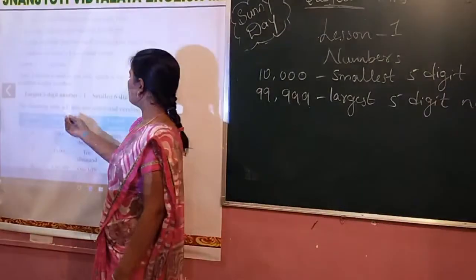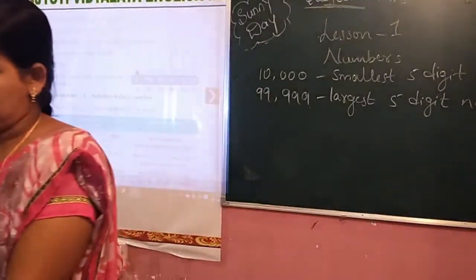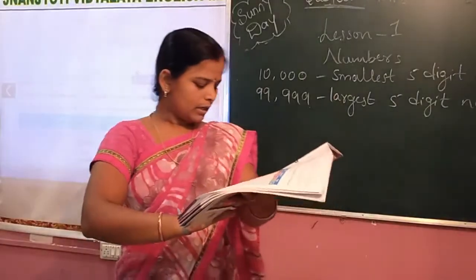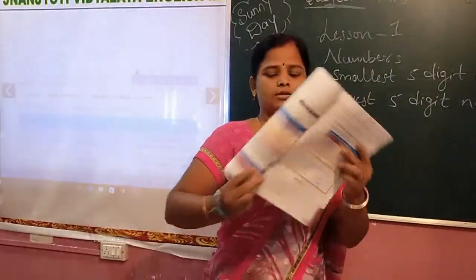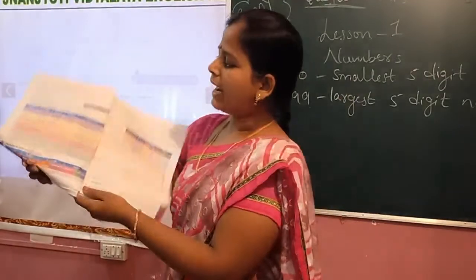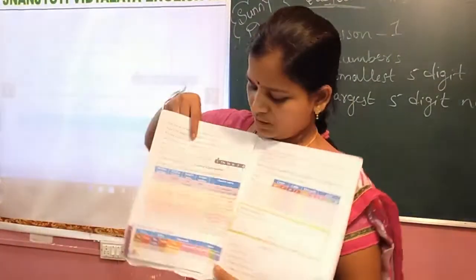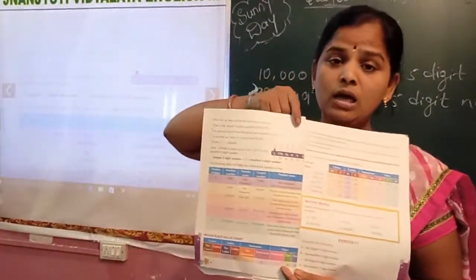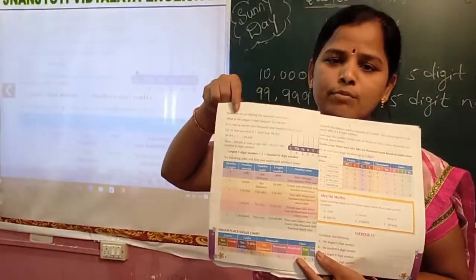The following table will help you understand numbers better. In your textbook, page number 66, observe this and make a chart yourself. This will help you understand how to read numbers and how to identify the number places.